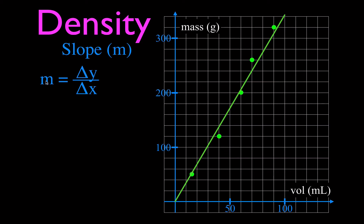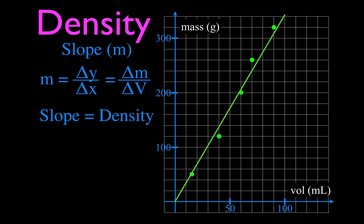The slope of a line — m being the symbol for slope, as in y = mx + b — is defined as the change in y, which is the mass, over the change in x, which is the volume. So we can say the change in mass divided by the change in volume. And if you remember, the density equation is: density equals mass divided by volume. That means the slope of this line — the steepness — equals the density. So the greater the slope, the greater the density; lower slope, lower density.